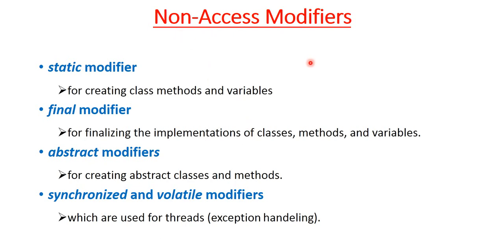Now let us discuss non-access modifiers. Non-access modifiers are rarely used in Java programming, but since we are covering Java basics we need to know them. There are four non-access modifiers: the static modifier, for creating class methods and variables; the final modifier, for finalizing the implementation of a class, method, or variable; the abstract modifier, used when dealing with abstract concepts in OOP; and the synchronized and volatile modifiers, which are used for thread and exception handling to provide error messages to the user.